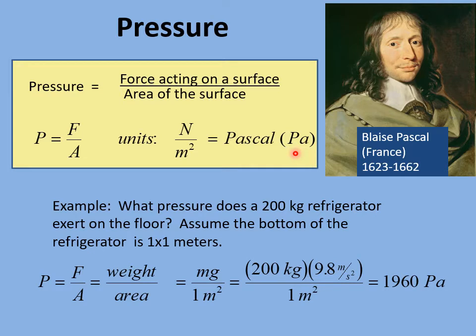Let's do a quick example to calculate pressure. What pressure does a 200 kg refrigerator exert on the floor, assuming its base is 1 meter by 1 meter? Pressure equals force divided by area. The force is the weight mg: 200 kg times 9.8. The area is 1 square meter. This gives 1,960 pascals.